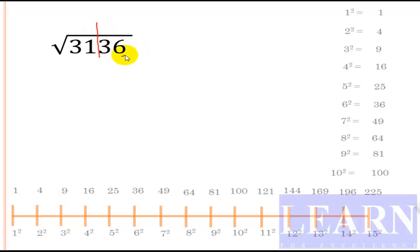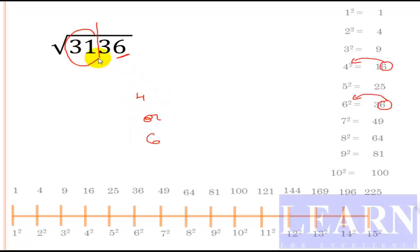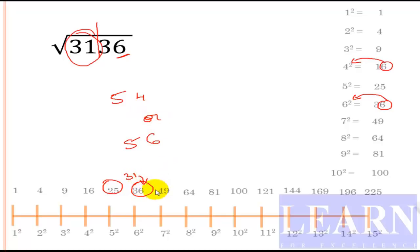The next number ends with 6, so the square root will end with either 4 or 6. The first part is 31, which is greater than 25 (that is 5 squared), so the answer is either 54 or 56. Now check: 31 is closer to 36 than to 25, so we select the greater number. The answer is 56. If confused with any problem, rewind the video and look at it once.